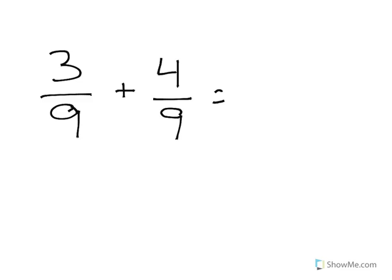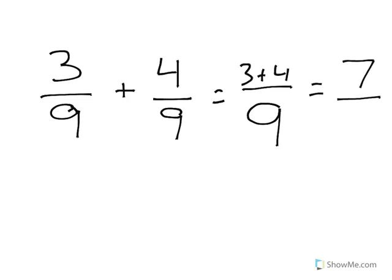This one I'm not going to draw a picture of — we're just going to add it. Remember, look at the denominators: are they the same? Yes they are. So carry the nine straight over. Then add three plus four, which equals seven. Our answer here is seven ninths.